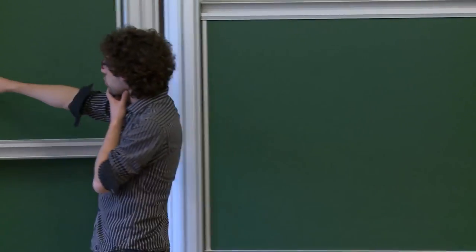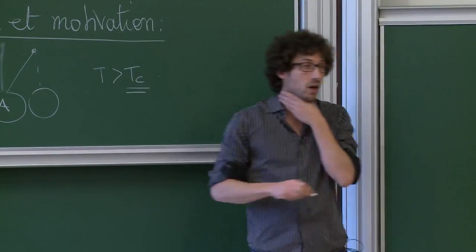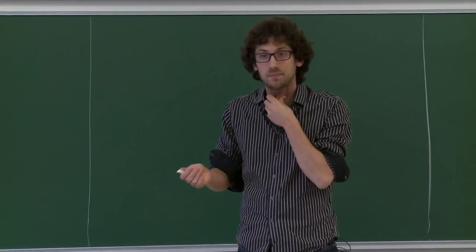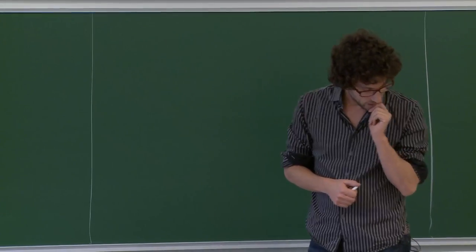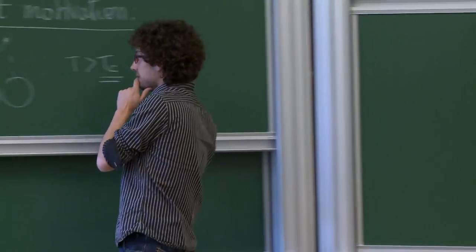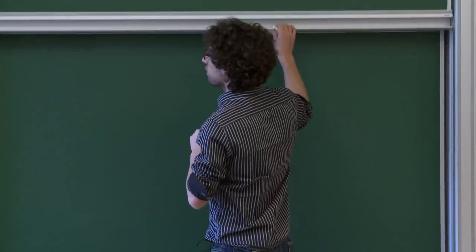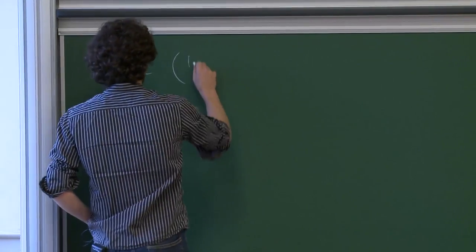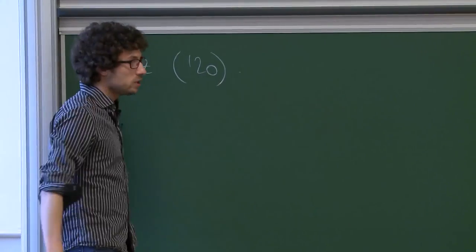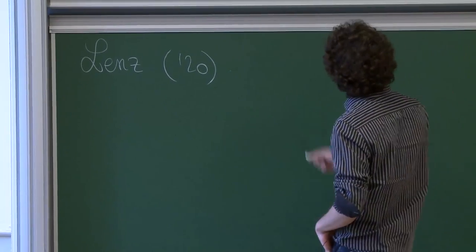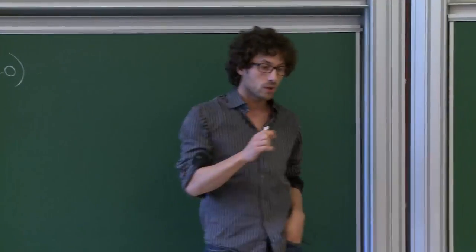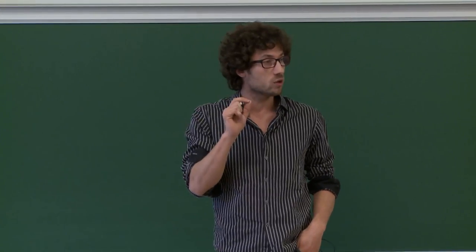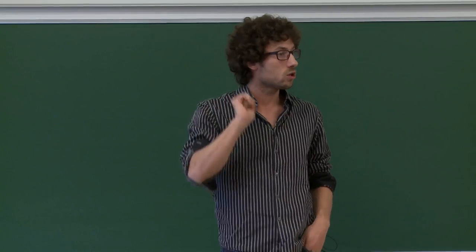Afin de comprendre ce phénomène, Lenz introduit en 1920 le modèle d'Ising. Ce modèle prétend que votre aimant est composé de petits atomes, chaque atome se comportant comme un petit aimant qui pointe soit vers le nord, soit vers le sud.